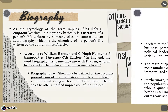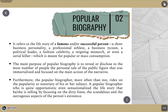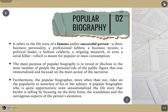The next type is the popular biography. It refers to the life story of a famous and/or successful person — either a show business personality, professional athlete, business tycoon, political leader, fashion celebrity, a reigning monarch, or even a serial killer — which is meant for popular or mass consumption. The main purpose of this biography is to reveal to the most number of people the tale of the public figure. You need to focus on the main action only of the person and write on the popularity and notoriety of your subject. You need to be quite opportunistic, even sensationalize the life story by focusing on the dirty linen, the scandalous and outrageous aspects of the person's existence.